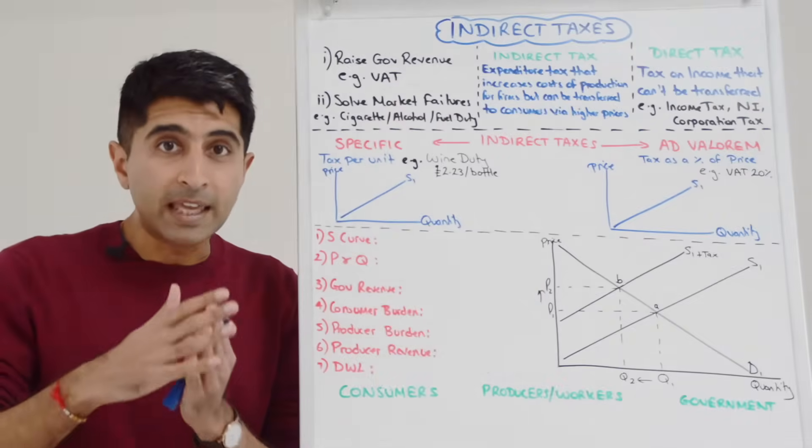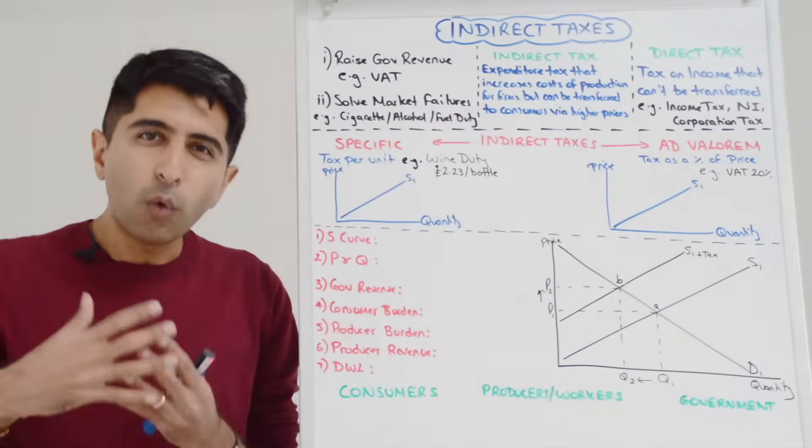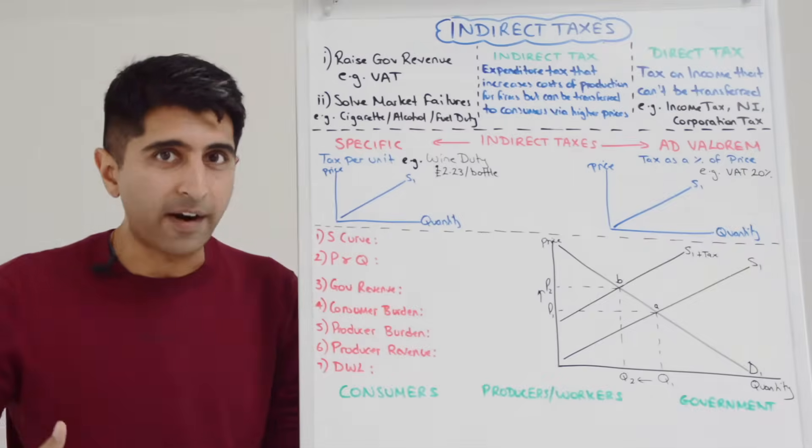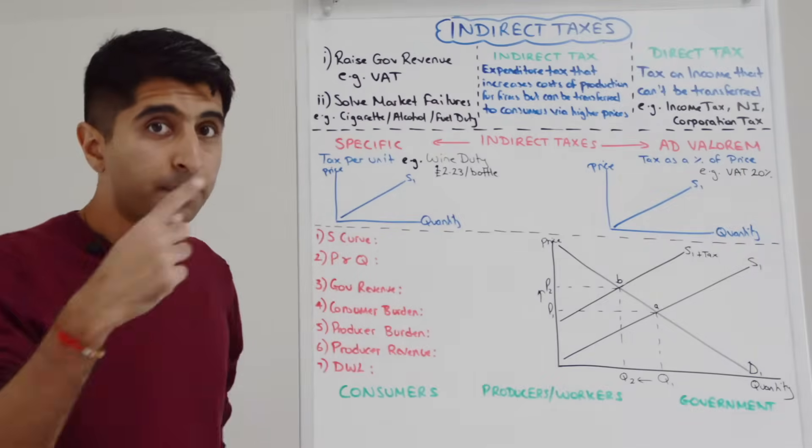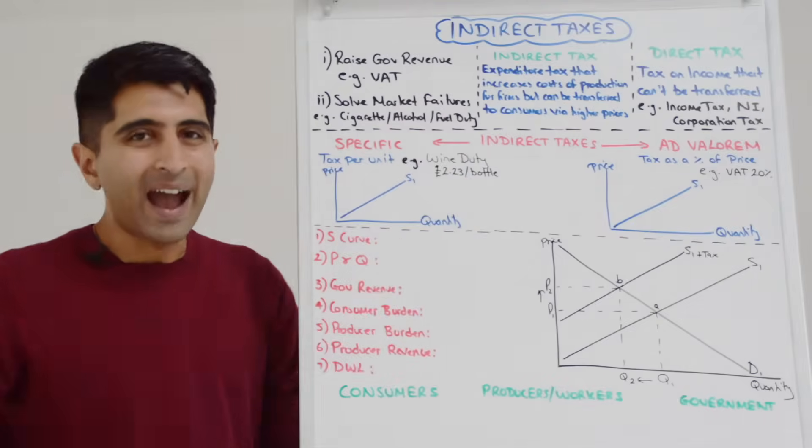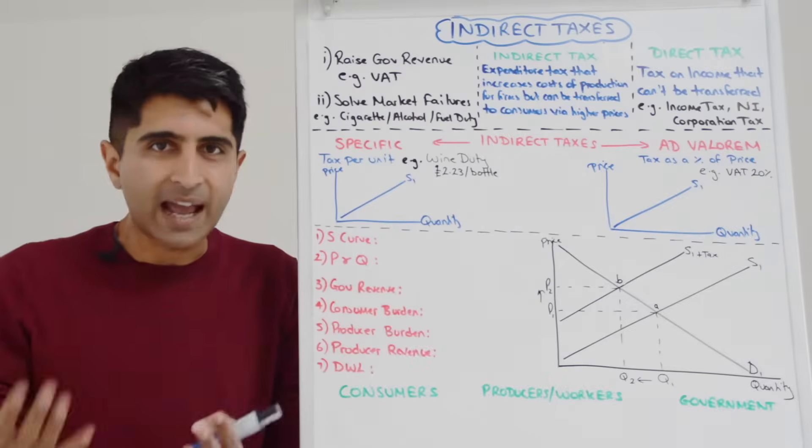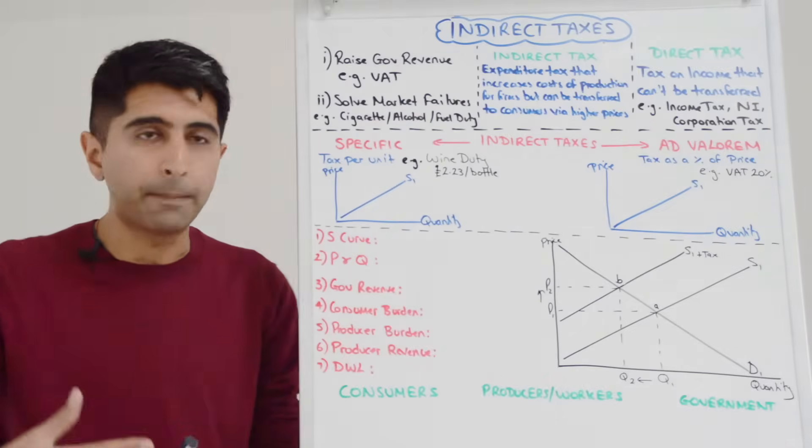Indirect taxes can be specific in nature or they could be ad valorem. What does this mean? Well a specific indirect tax is a tax per unit. Take for example wine duty or alcohol duty, wine duty, a tax per unit. So every single bottle of wine will have a tax let's say of £2.23 applied to it.